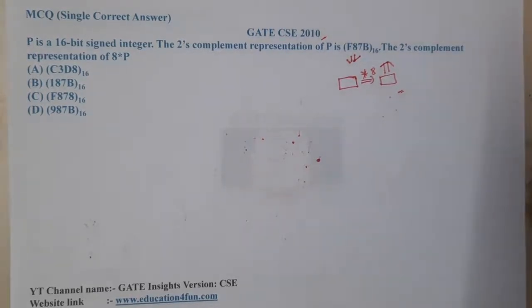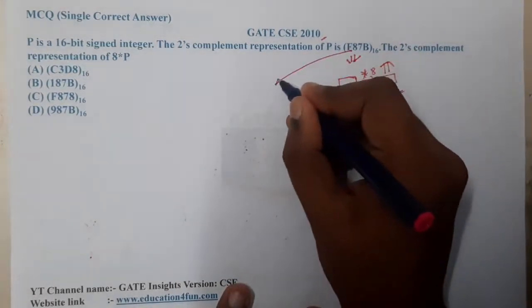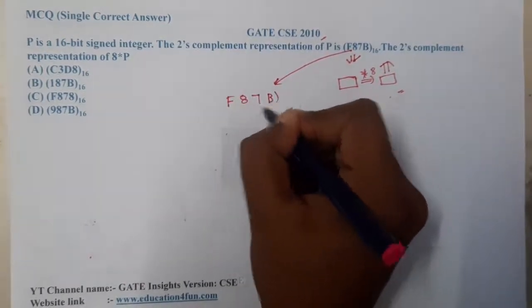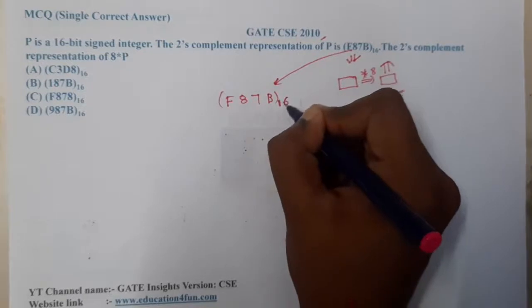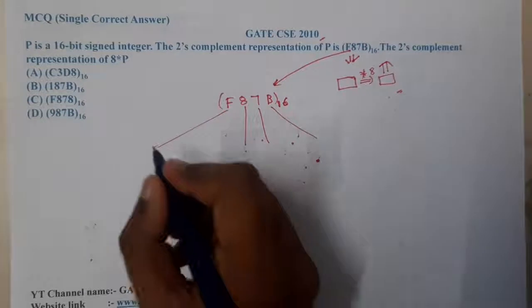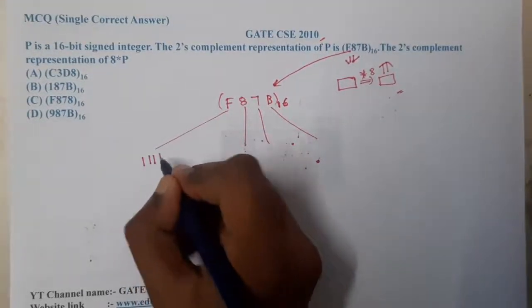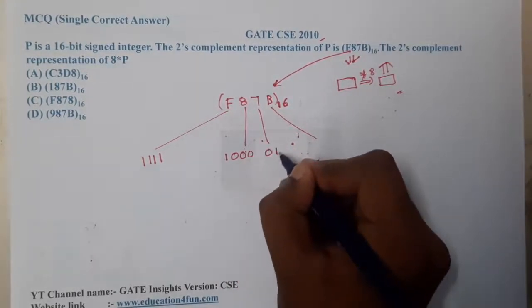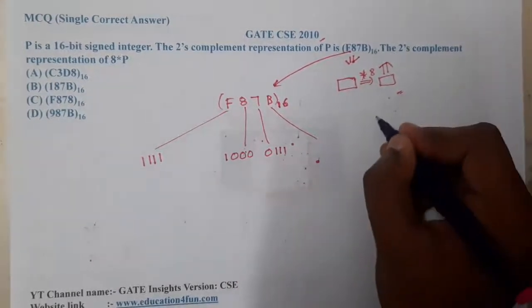The trick is really easy, you just need to concentrate for a few minutes. Let us start by writing this number in binary. F87B base 16 means each number will be written in four bits. How you can write F in four bits? It is triple one. How you can write 8? It is 1000. How you will write 7? It is 0111.